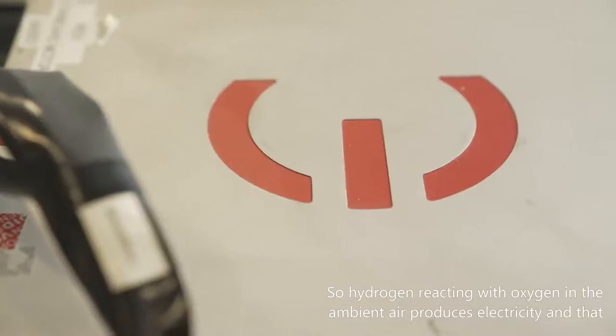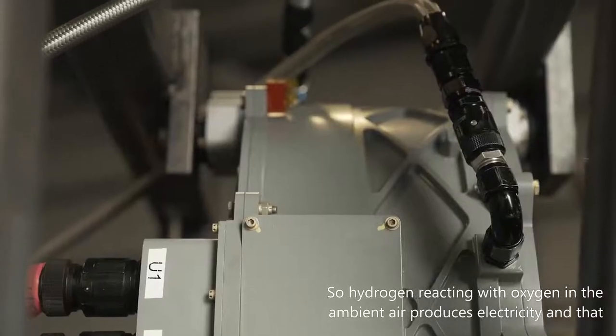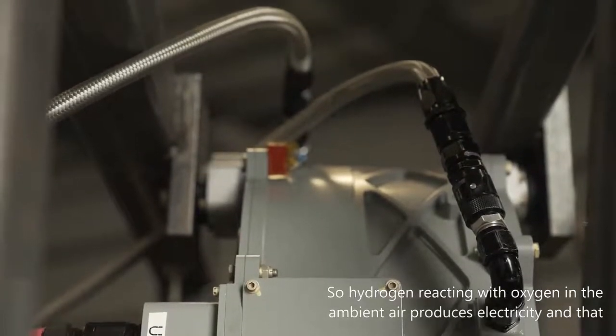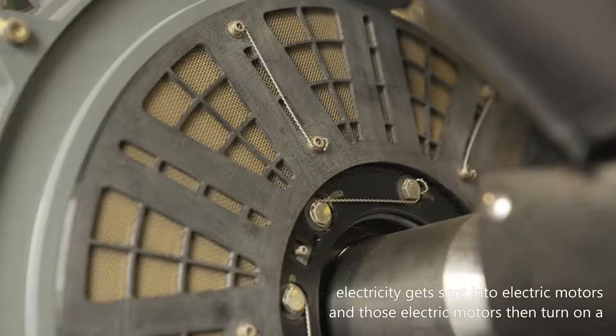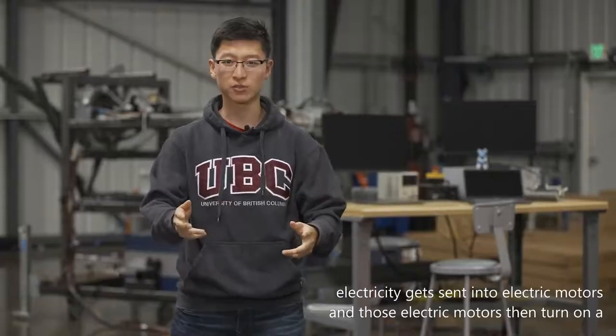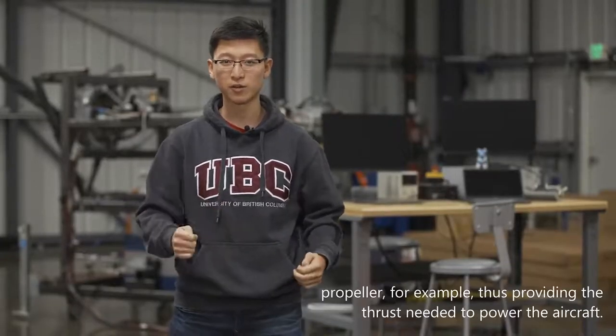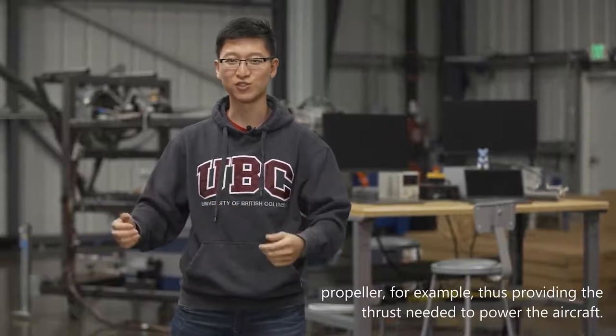the fuel cells reverse electrolysis reaction happens. So hydrogen reacting with the oxygen in the ambient air produces electricity, and that electricity gets sent into electric motors and those electric motors then turn on a propeller, for example, thus providing the thrust needed to power the aircraft.